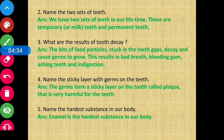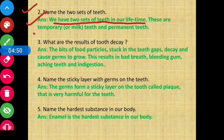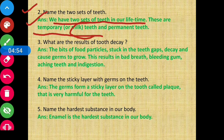Question number two: name the two sets of teeth. Answer: we have two sets of teeth in our lifetime. The first one is temporary teeth, also called milk teeth, and the next one is permanent teeth.